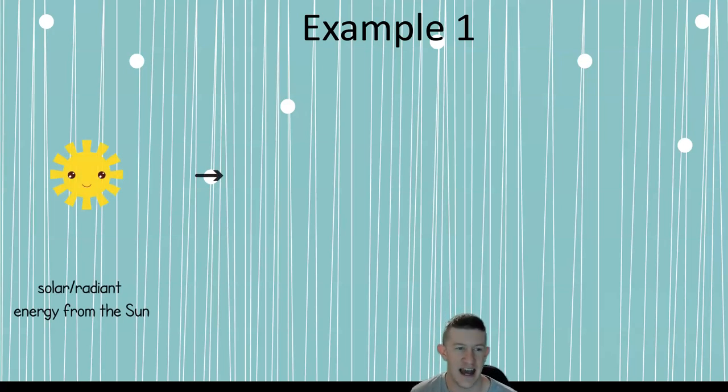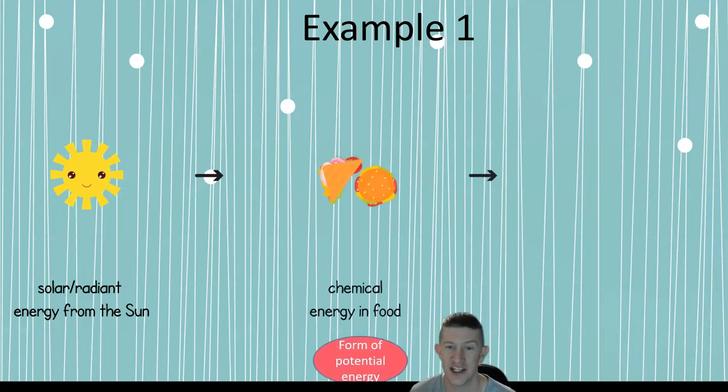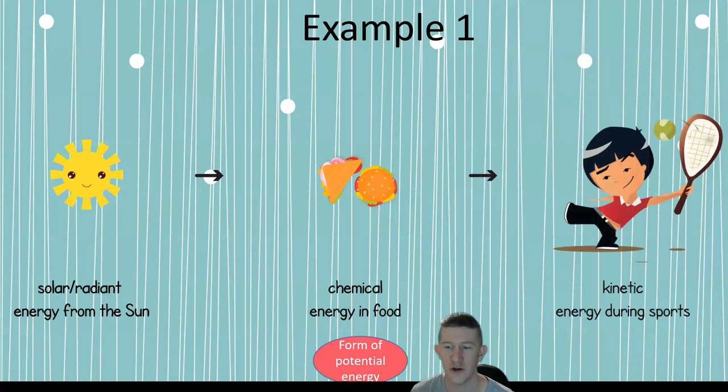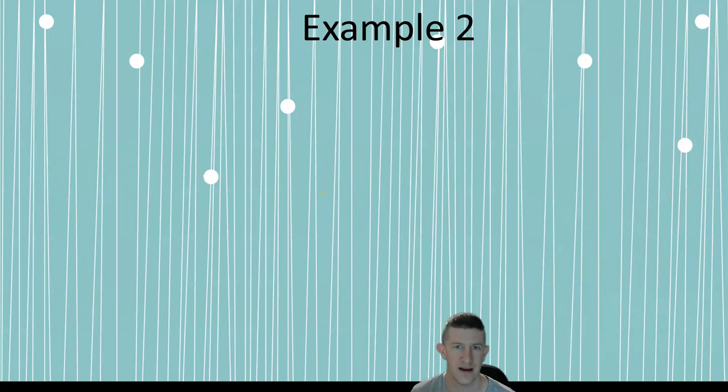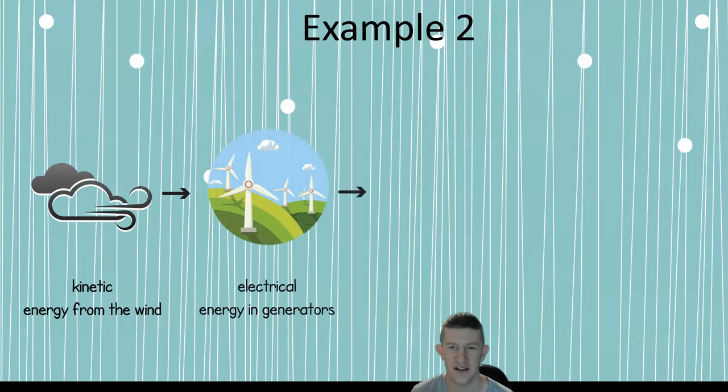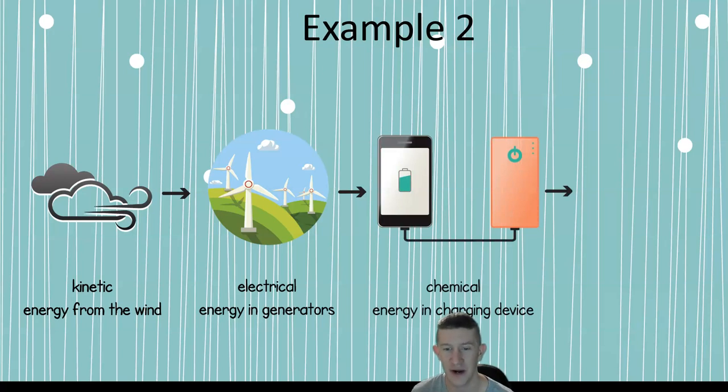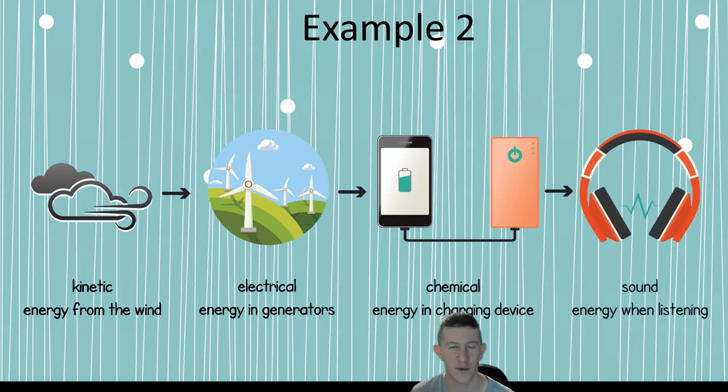Another example of energy conversions: solar energy from the sun is converted to chemical energy in food through photosynthesis. The plants absorb it, they create an energy source. Then you eat the food and use that for kinetic energy during sport. Another example: kinetic energy from the wind turns turbine blades, which create electrical energy, which is stored in chemical energy in your charging device like your portable battery or phone. Then you use that to produce sound while you're cranking your beats on Spotify.